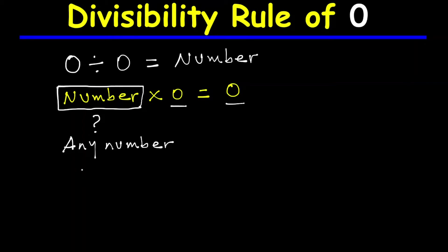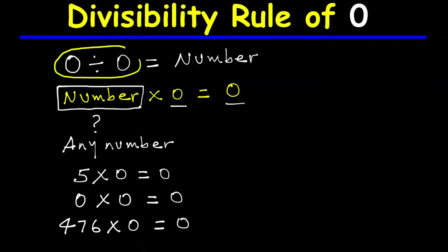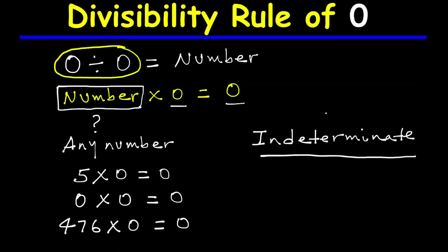This number can be five, because five multiplied by zero is zero. It can be zero, because zero multiplied by zero is zero. It can be 476, because 476 multiplied by zero is zero. Any number multiplied by zero is zero, so any number can be the answer to this division — there are infinitely many answers. Therefore, we say zero divided by zero is indeterminate.